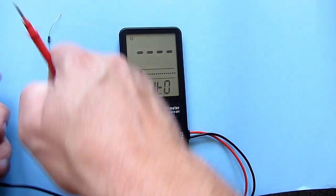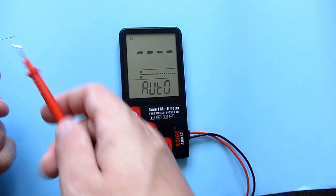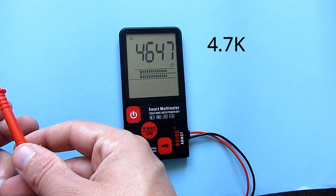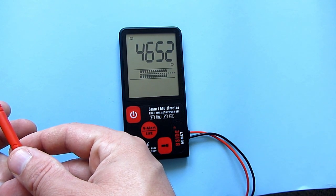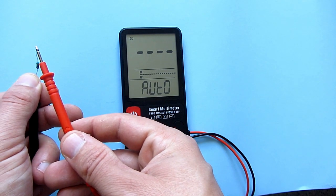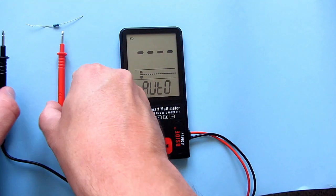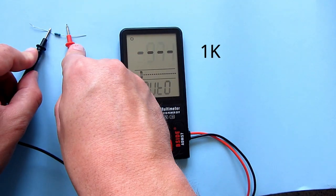It can also measure resistance. I will test it with this 4.7K resistor. It works very nice. Let's try this 1000 ohms resistor, 1K. Also works well.